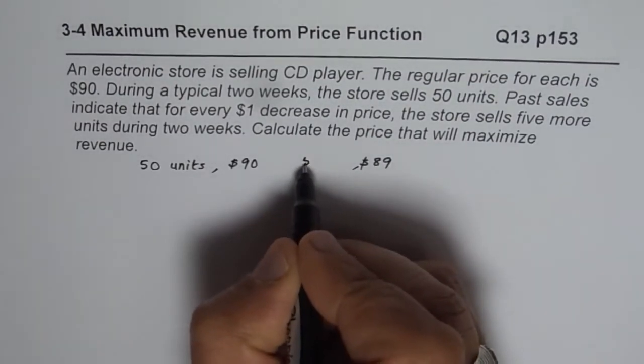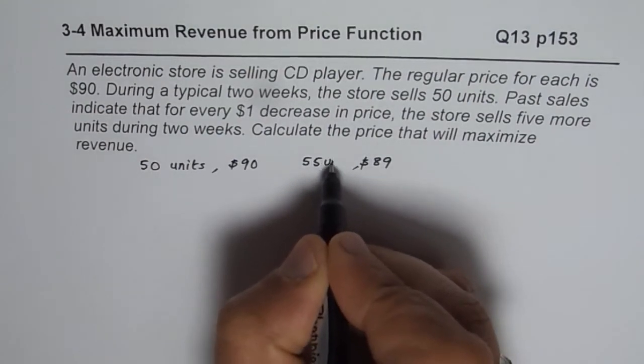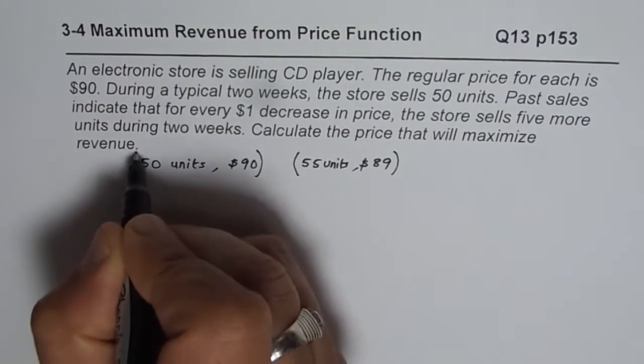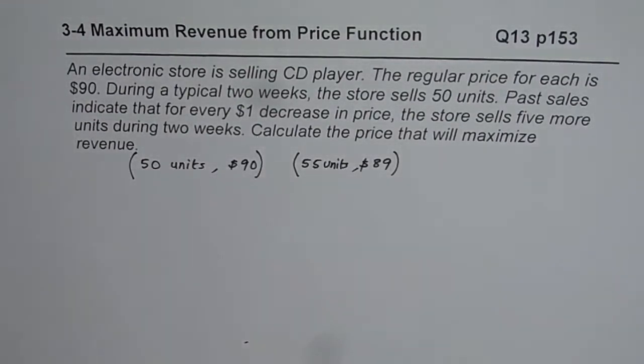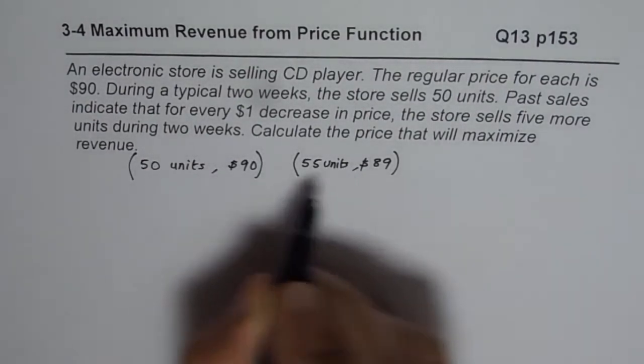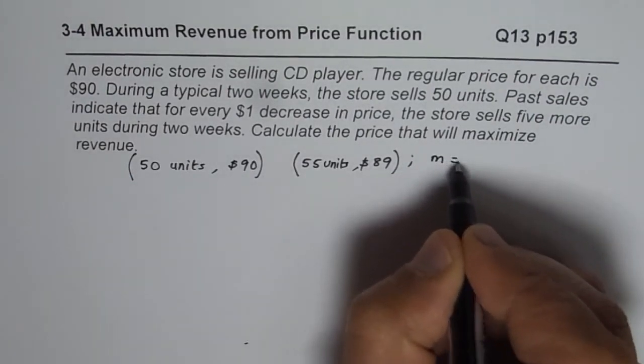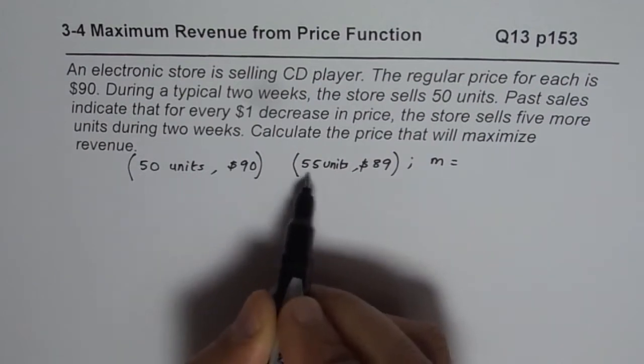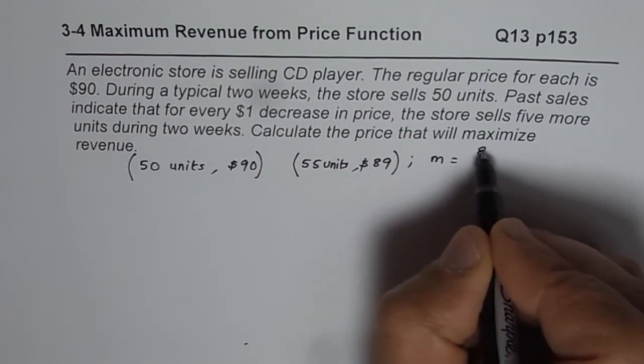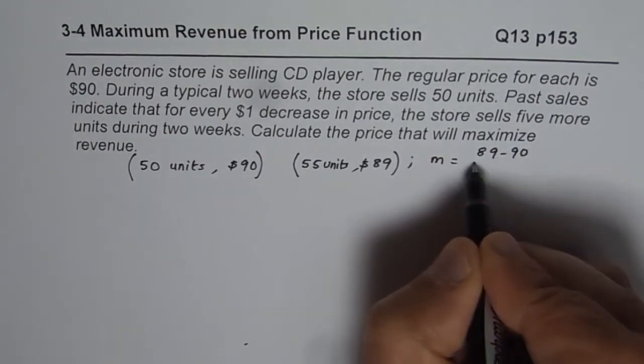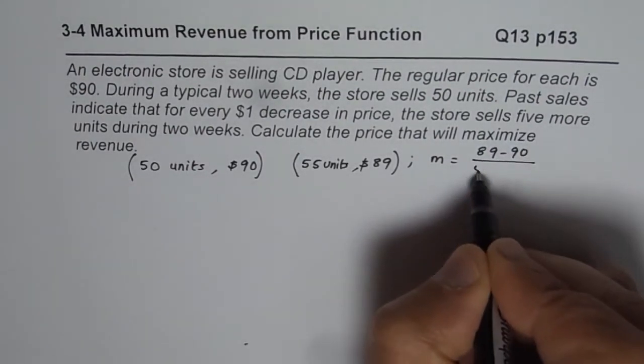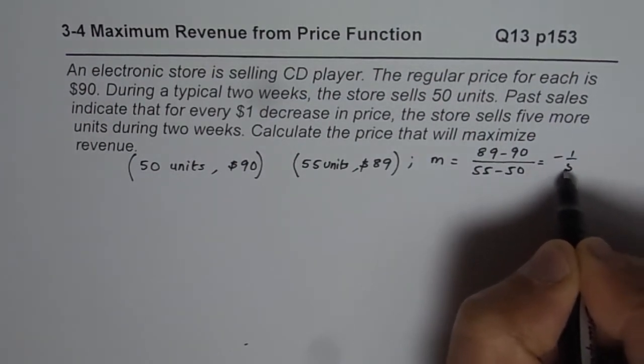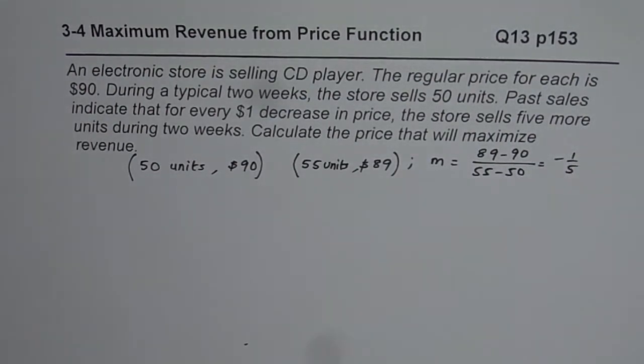5 more units means 55 units. So you can consider that to be your coordinate points. It's a linear function. Now once we have 2 coordinate points, we can find slope. So slope is change in y value divided by change in x values, which is 89 minus 90 divided by 55 minus 50 or minus 1 over 5. So that is the slope.